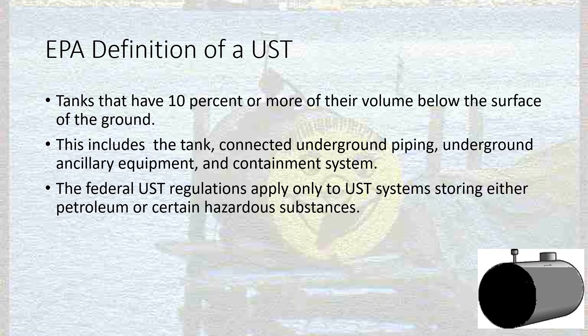The EPA definition of a UST is any tank that has 10% or more of its volume below the surface of the ground. This takes into consideration piping also, and includes the tanks, underground piping, underground equipment, and the containment systems associated with USTs. If more than 10% of the volume — including the piping — is underground, that makes it a UST. So if you have an abnormally long piping run, a tank that wouldn't normally be considered a UST now would be — though I've never seen that happen, it's theoretically possible.